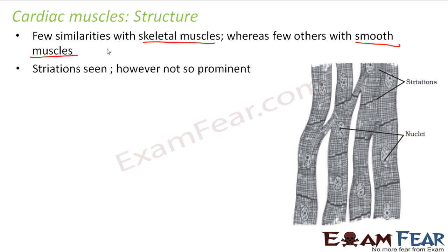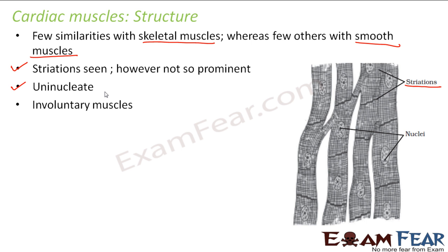Cardiac muscles have striations, however not so prominent — this is a similarity with skeletal muscles. But at the same time, they are uninucleate — one nucleus per cell — which is a similarity with smooth muscles. They are also involuntary, another similarity with smooth muscles. So cardiac muscles have characteristics that are a combination of both skeletal and smooth muscle characteristics. You can see it is uninucleate, with one nucleus for every cell.